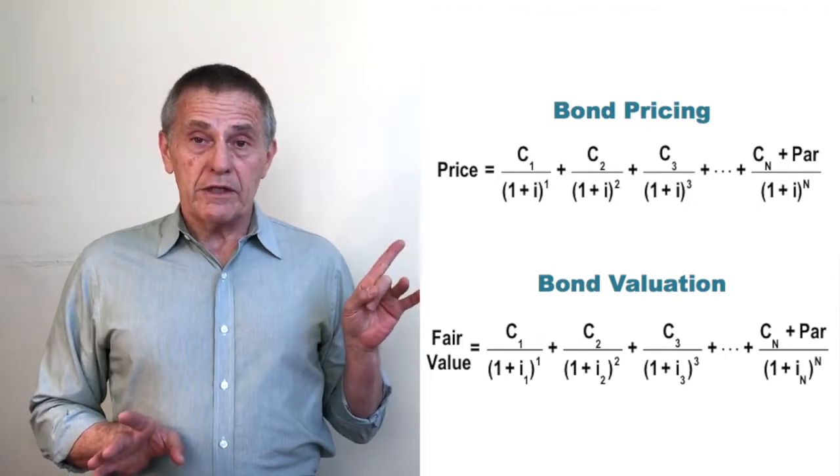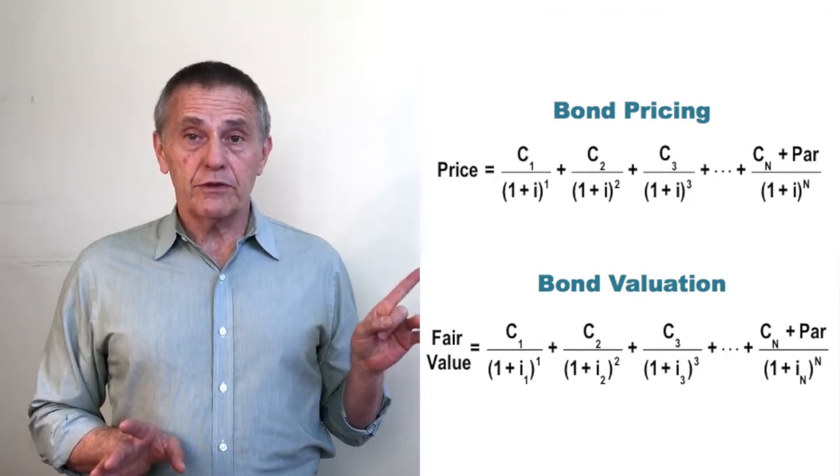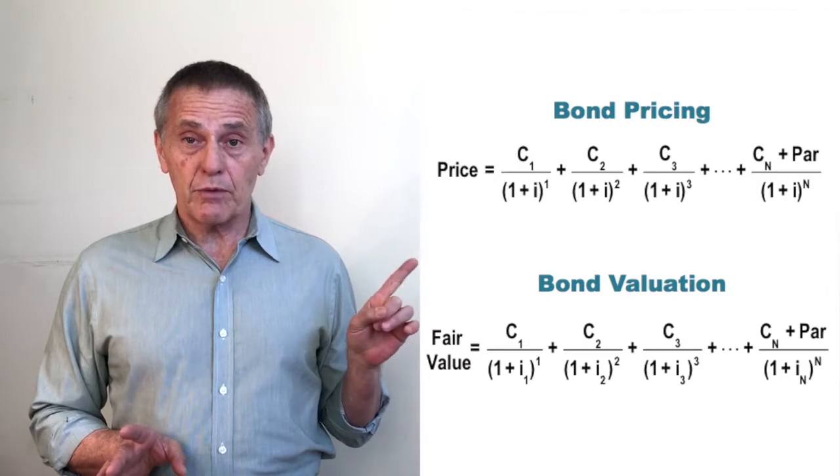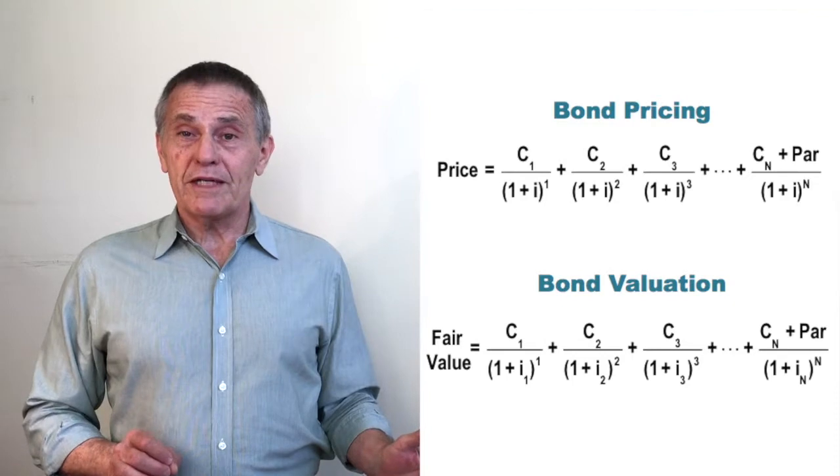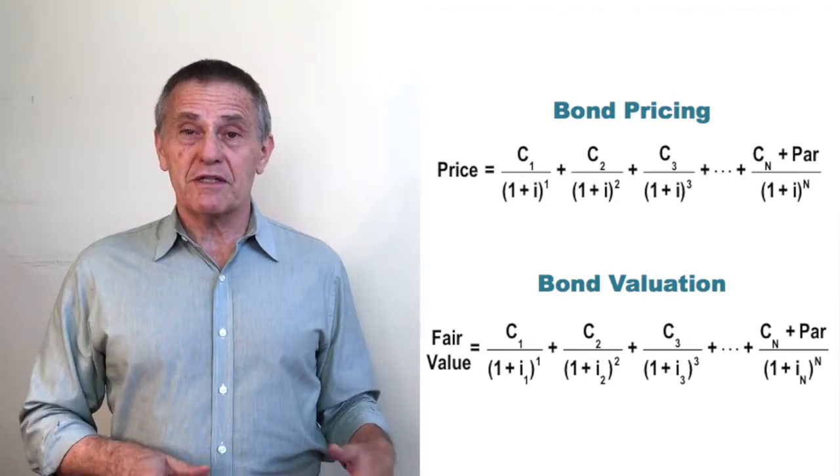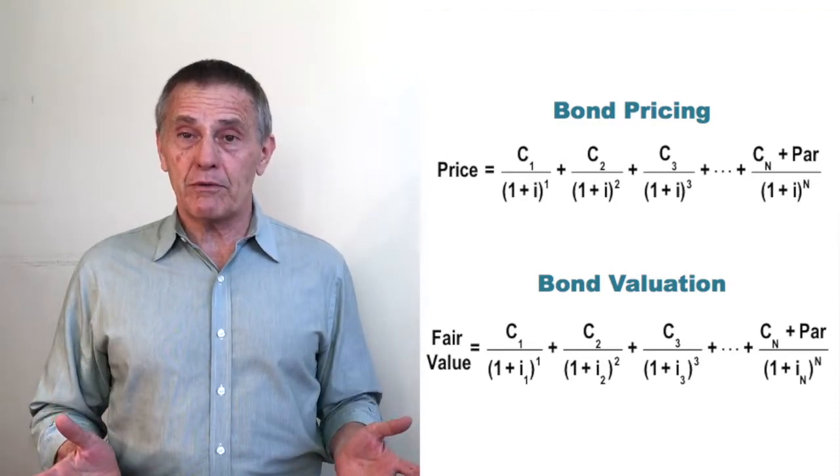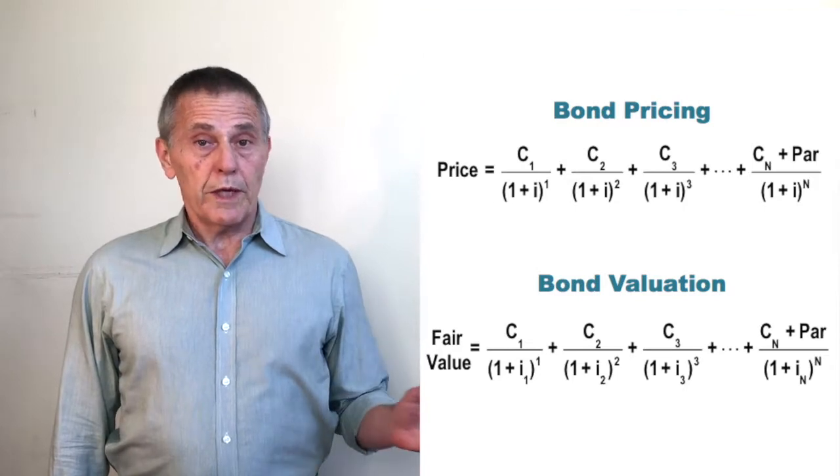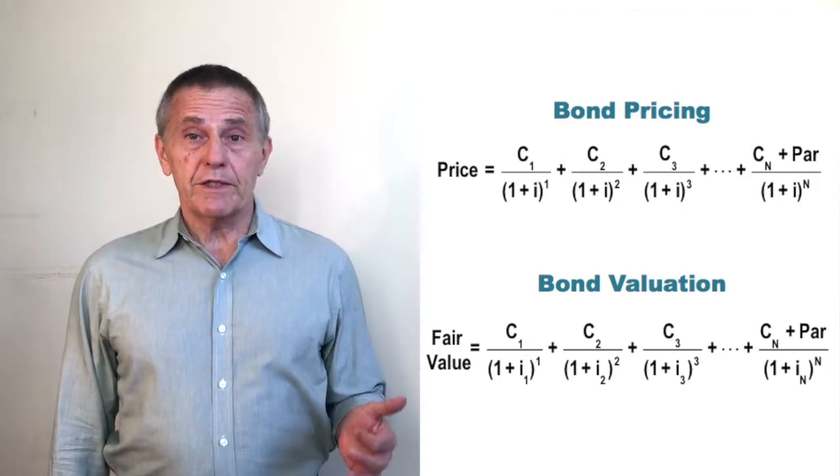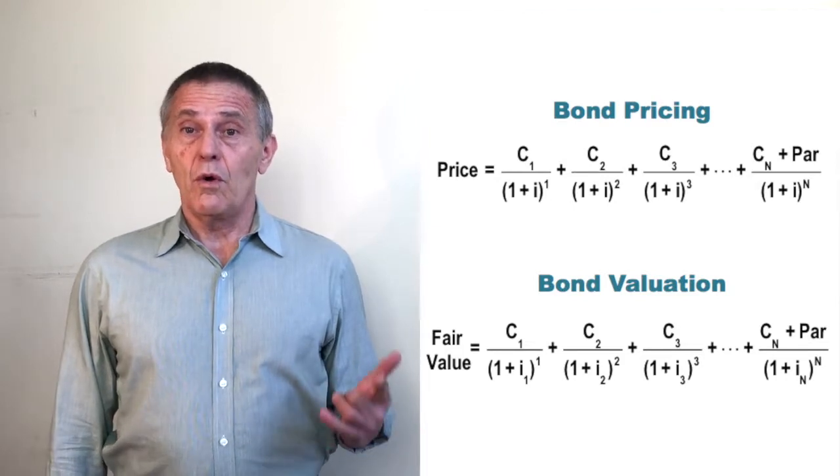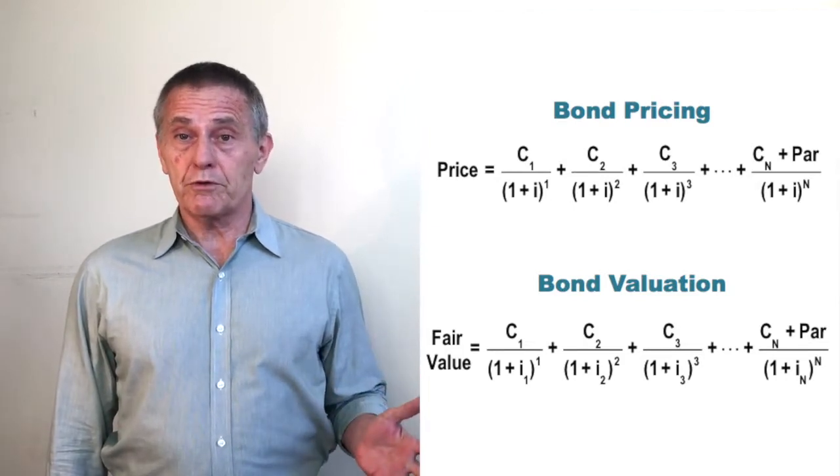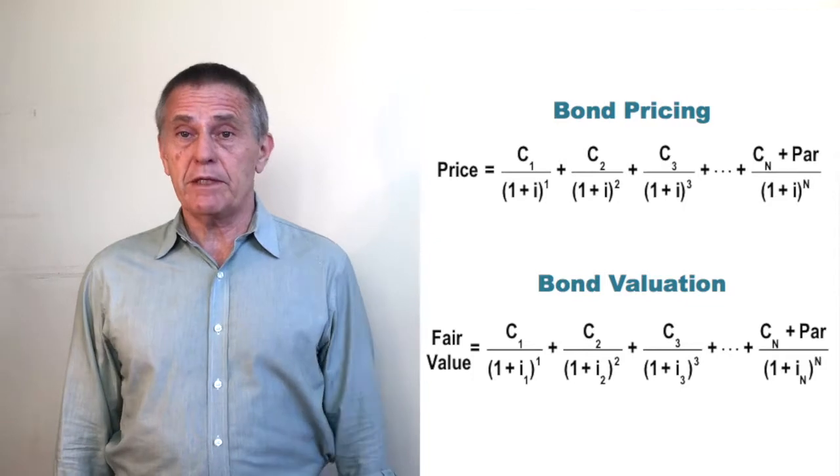Whereas the i in the pricing formula is the yield to maturity expressed as a periodic rate, the subscripted i's in the fair value formula represent the periodic expressions of the appropriate term spot rates. In other words, when estimating fair value, we want to discount 6 month cash flows by 6 month interest rates, 1 year cash flows by 1 year interest rates, and 10 year cash flows by 10 year interest rates.